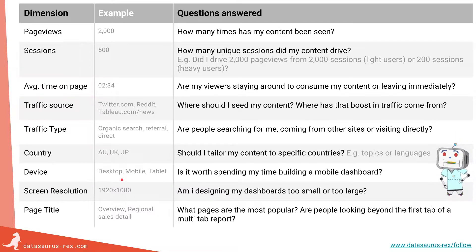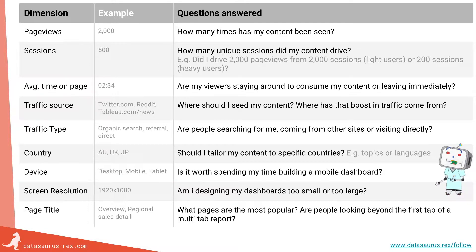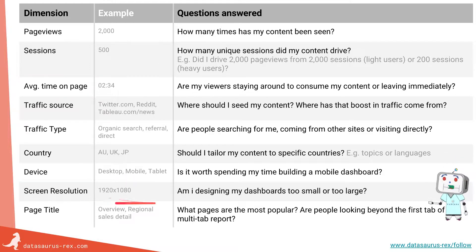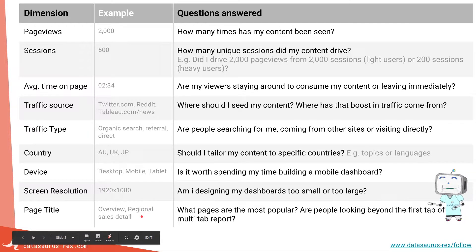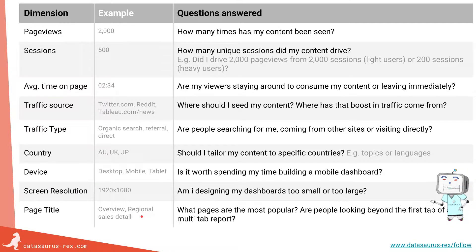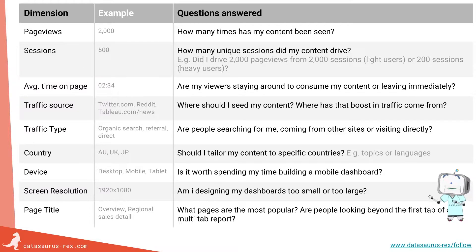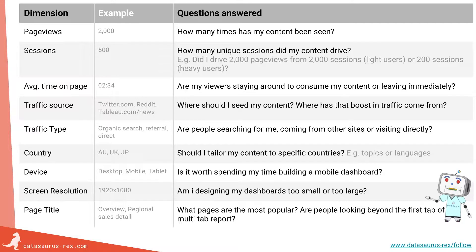Do I spend my time building for all three device types? Maybe I can just focus on one. This is key, especially as an analyst when your time is limited and you can't do everything. This can really help inform where to spend your time. Equally, am I building my dashboard too big or too small? I can now start to figure this out. And with page titles — say if I have a 20-page report but only three of those tabs are being used, that's huge.